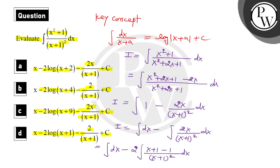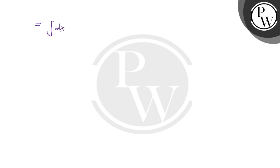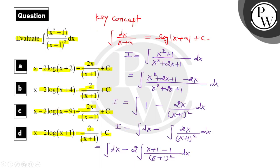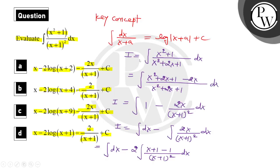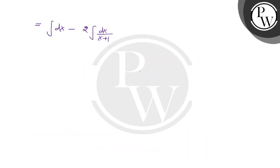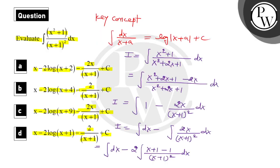Further simplifying, this becomes: ∫dx minus 2 times [∫(x+1)/(x+1)² dx − ∫1/(x+1)² dx]. Separating these gives: ∫dx − 2∫dx/(x+1) + 2∫dx/(x+1)². The minus times minus gives a plus 2 for the last term.